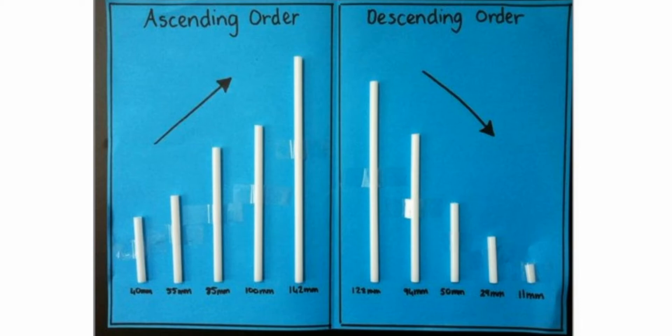इसको समझने के लिए worksheets आपको दी जाएंगी। Example लेते हैं: 1, 2, 3, 4, 5 — यह series आपकी ascending है क्योंकि इसमें 1 सबसे छोटा है और comparatively 5 सबसे बड़ा है। तो अगर ascending कहा जाए तो you need to start that series with the smallest number और end करना है बड़े number पर। Descending के लिए you need to find the biggest number, उससे start करेंगे and then follow with consecutive smaller numbers.